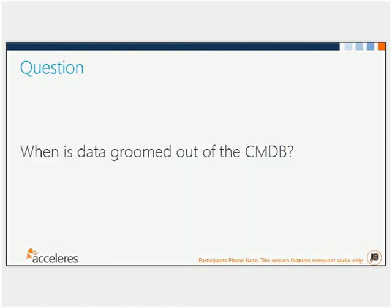The next question is: when is data groomed out of the CMDB? Many customers notice the data retention settings in Service Manager but aren't sure how grooming works. There are three kinds of data: configuration items in the CMDB, work items in the CMDB, and reporting data. Work items include incidents, problems, and changes; configuration items include users, computers, and software.